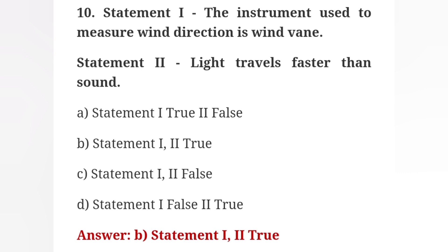Question 10: Statement 1 — The instrument used to measure wind direction is wind vane. Statement 2 — Light travels faster than sound. Answer: Option B — Both Statement 1 and Statement 2 are true.